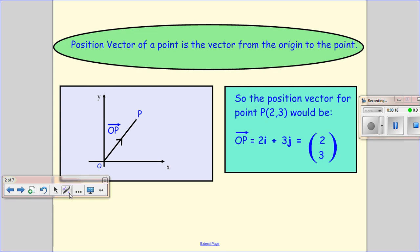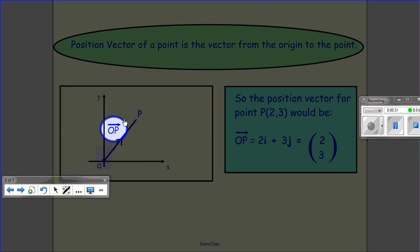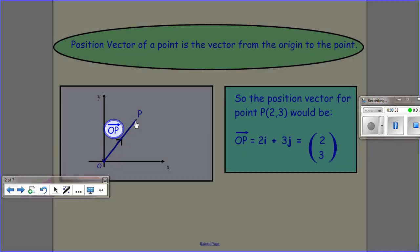Okay, so first of all we're going to start with talking about the position vector of a point, and that's a vector from the origin here to our given point. And we can write it like this, OP from the origin to the point.